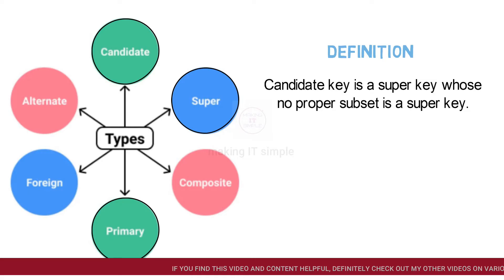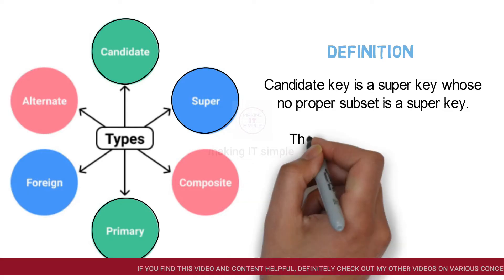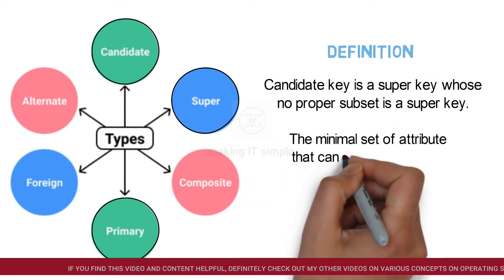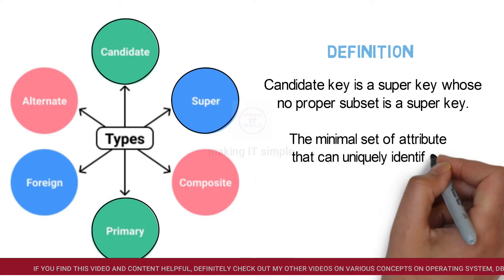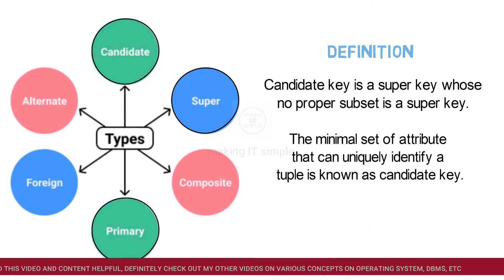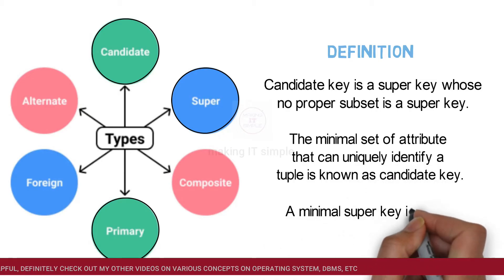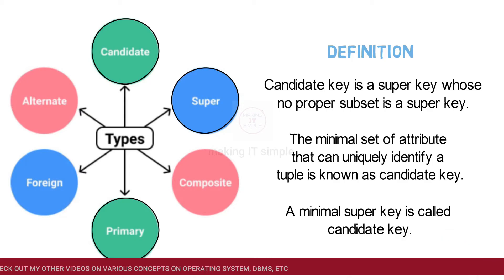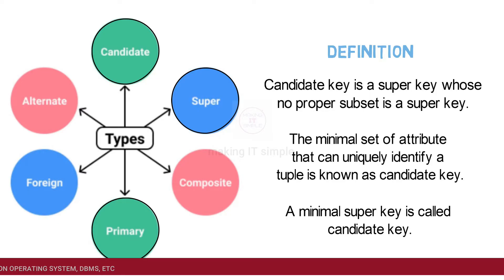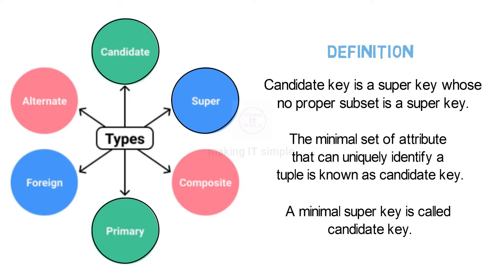Candidate key can be defined in a few more ways. The minimal set of attributes that can uniquely identify a tuple is known as candidate key. Or another way: a minimal super key is called a candidate key. Do not worry if you didn't understand the definition — let us solve one example regarding candidate key which will simplify the definition and resolve any doubts.